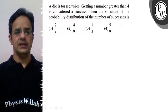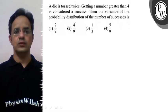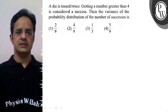Hello Bachcho, the problem states: a die is tossed twice and getting a number greater than 4 is considered a success. Then the variance of the probability distribution of the number of successes is?